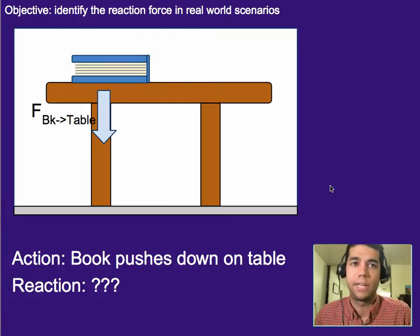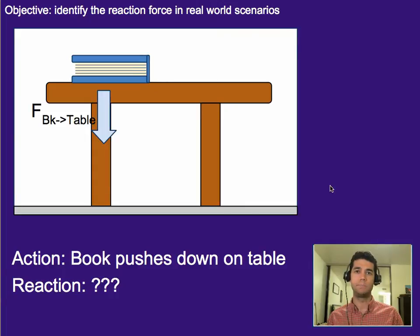All right. So let's get some practice on this. Let's say the action force in this case is the book pushes down on the table. So we've got the book here, we've got an arrow for the force, and we've got a kind of subscript here to show what direction and what's happening or what this force is. In this case, book pushing on table. Go ahead and think about it for a second. What's the reaction force?